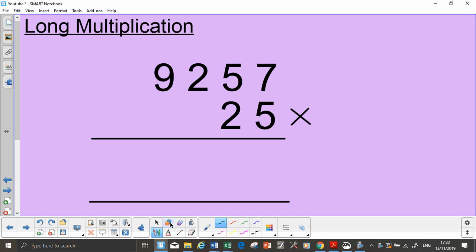The most important thing with long multiplication: the first line you're going to multiply all of these numbers by the 5. The second thing is multiply all the numbers by 2. So this 2 isn't just worth 2, it's worth 20.